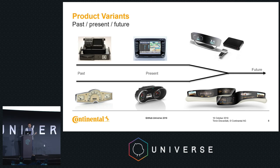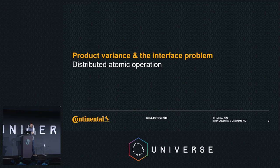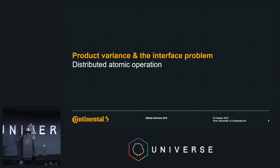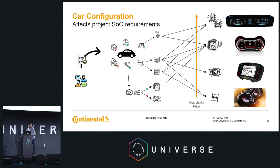This is the pre-story, and now the question is where does this connect to the multi-repository setup? The issue that drove our requirement to switch from a single to a multi-repository setup is that we have a very wide spectrum of product variants. This creates an interface problem, and we want distributed atomic operations on our code — when we make changes to our software for our devices, we want that as an atomic operation.